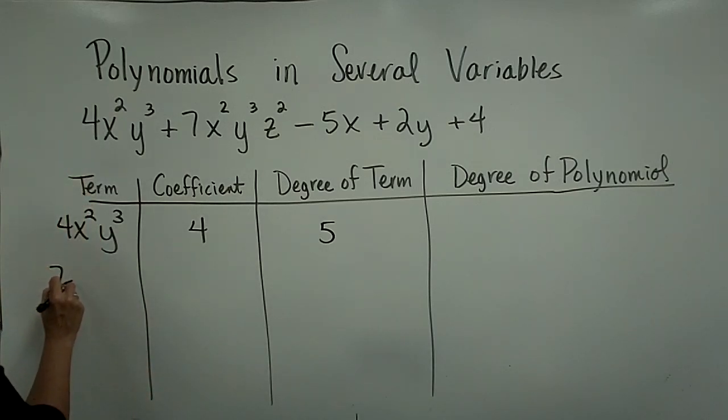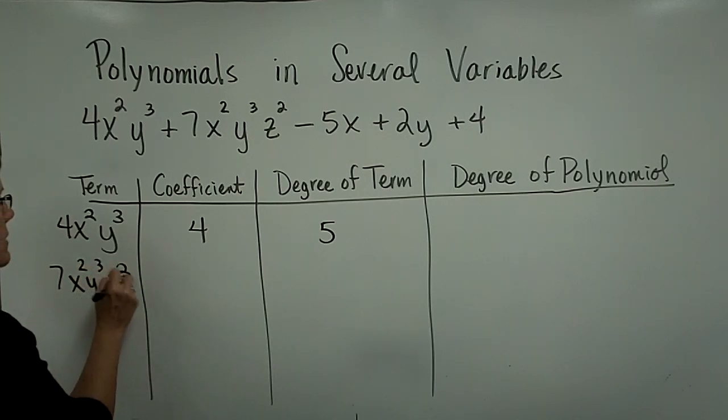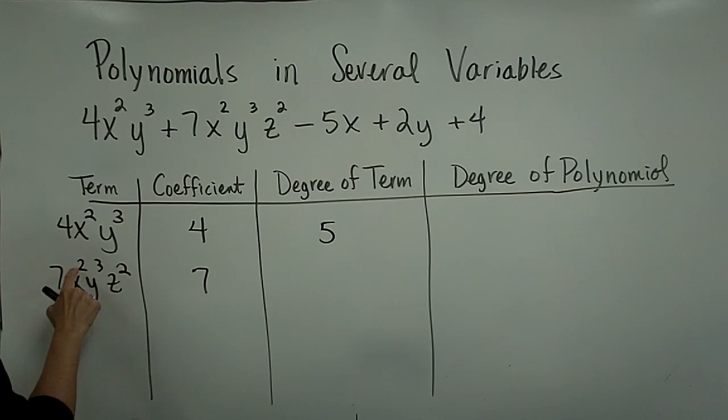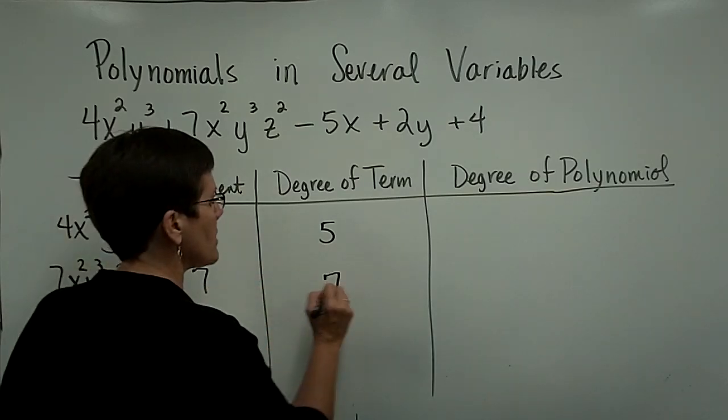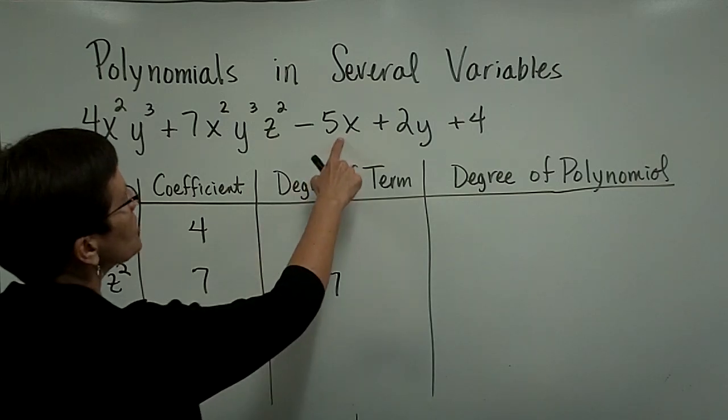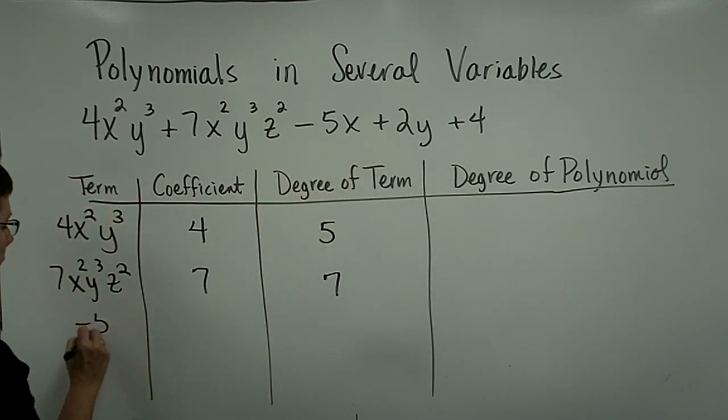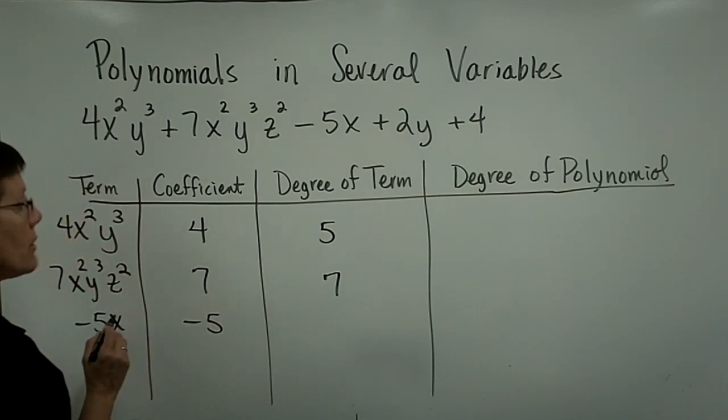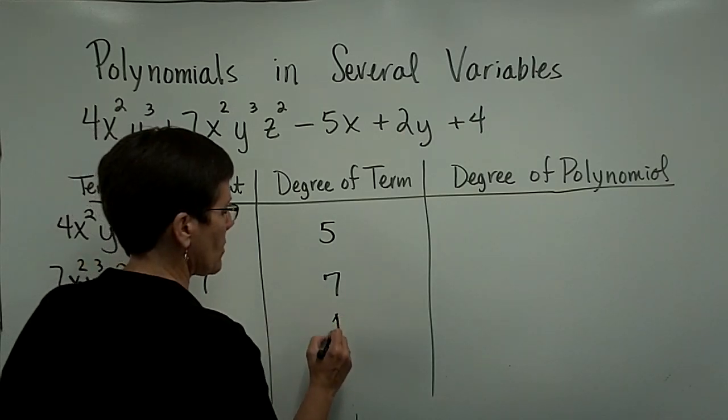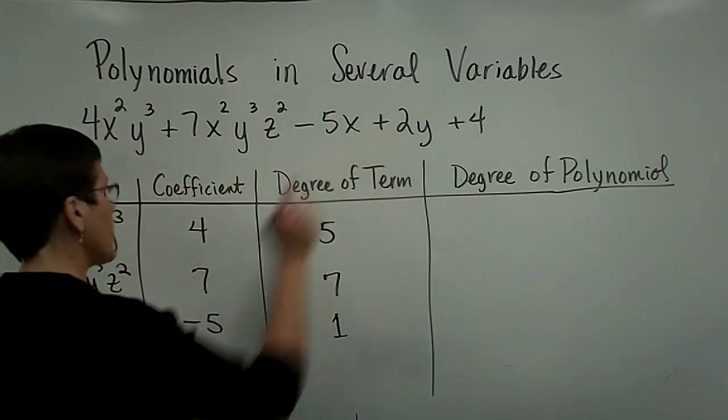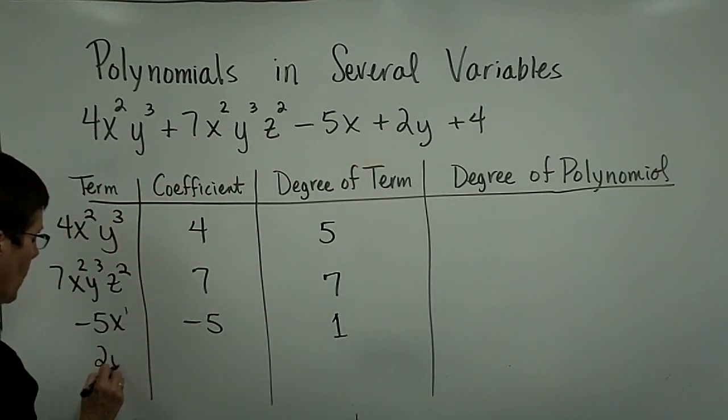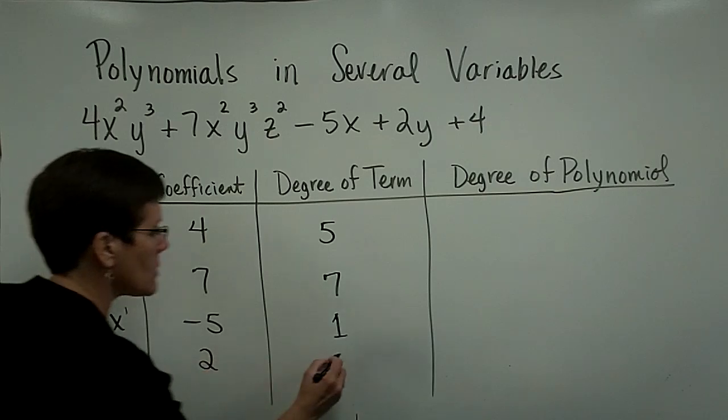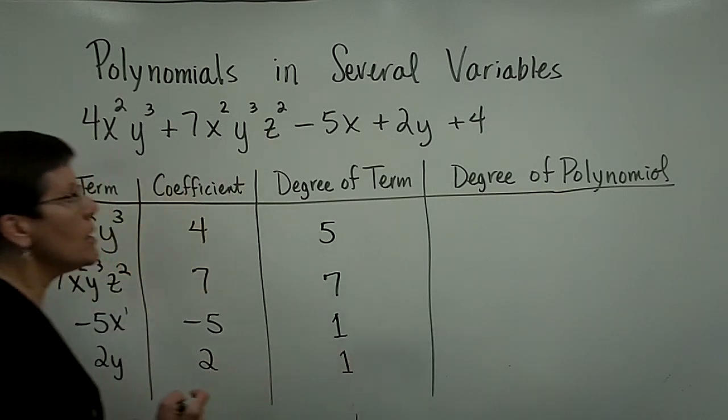The next term is a positive 7x²y³z². Its coefficient is 7. The degree of that term is 2 plus 3 plus 2 or a total of 7. The next term is minus 5x, and its coefficient is minus 5. The degree of that term is 1, x to the first power.